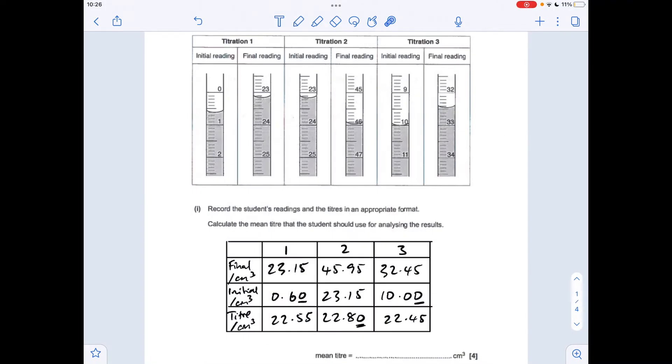Remember the important thing to bear in mind is if the base of the meniscus isn't quite on a line, so if we look at this one here you can see it's between 23.1 and 23.2, the only thing we can say for that is 23.15. That's the final burette reading for titration one. And the other thing to say is if the base of the meniscus is exactly on a line, it's point something zero. So this initial reading for titration one is 0.60.